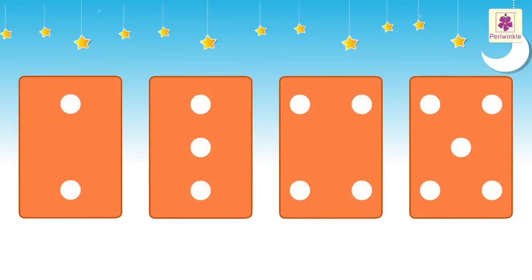Look, we have arranged few cards according to the increasing order of the dots. Starting with a card with two dots, three dots, four dots, five dots. Kids, let us follow the same pattern and find out the next four cards.